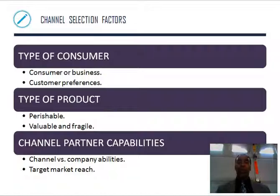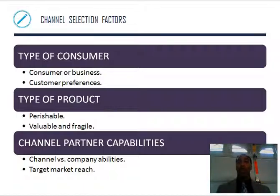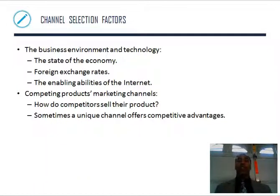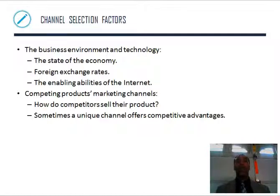Channel selection factors: type of consumer — consumer (B2C), business (B2B), or government (B2G). Customer preferences and type of product — could be perishables, or valuable/fragile products like Mikasa. Channel partner capabilities, channel and company abilities, and target market reach — are you reaching your intended target? Business environment and technology also matter: the state of the economy, foreign exchange rates, the enabling abilities of the internet. Competing products — how do competitors sell their products? If everybody else is online, maybe put your product in stores as a test market. Sometimes a unique channel offers a competitive advantage.